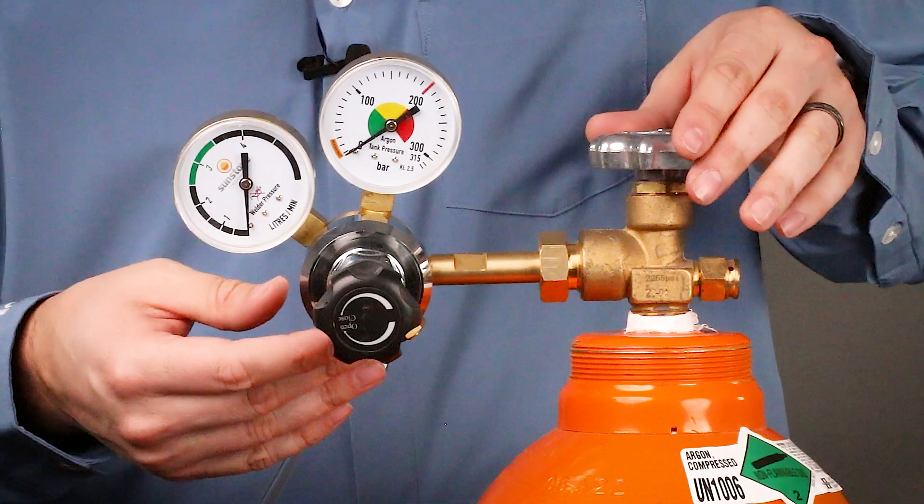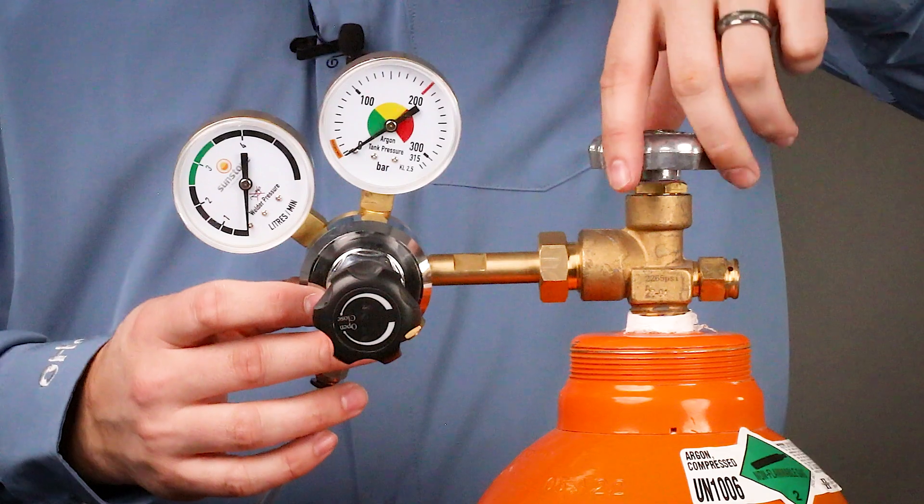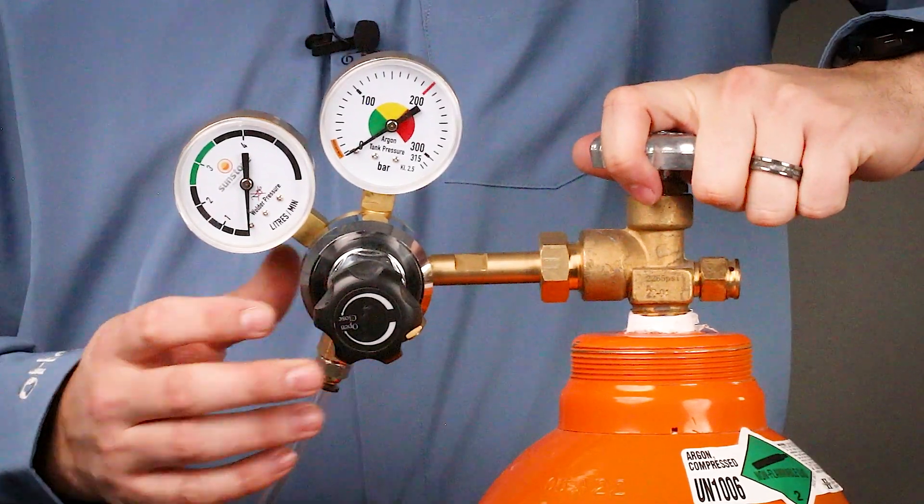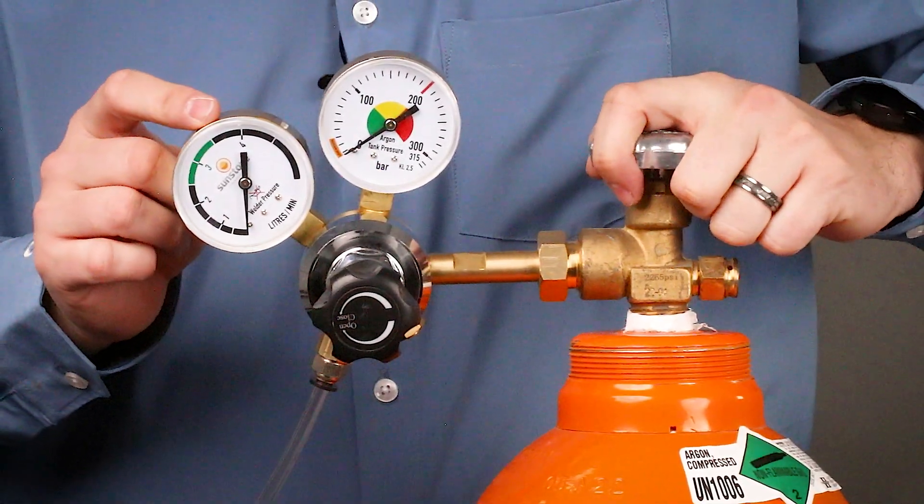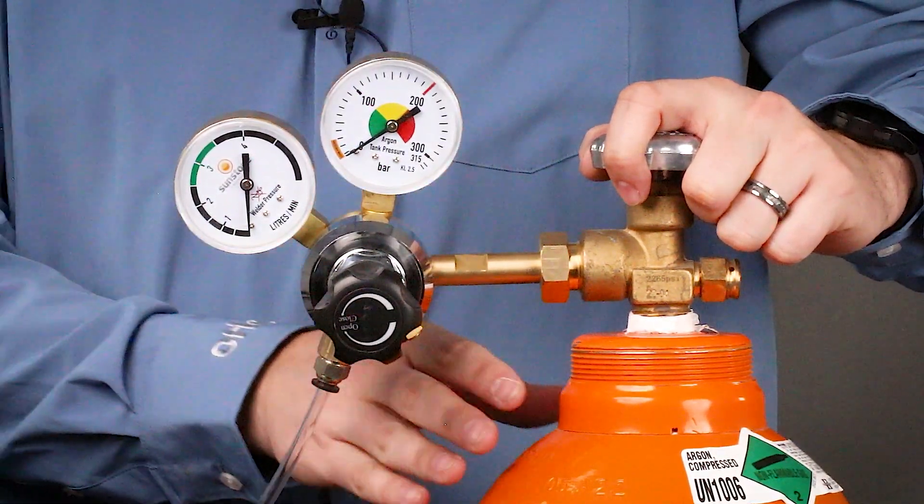Now that that's plugged into our welder, we can twist this open, or left—lefty loosey. You'll notice on our gauge here that it's going to go up and indicate what's inside our tank.